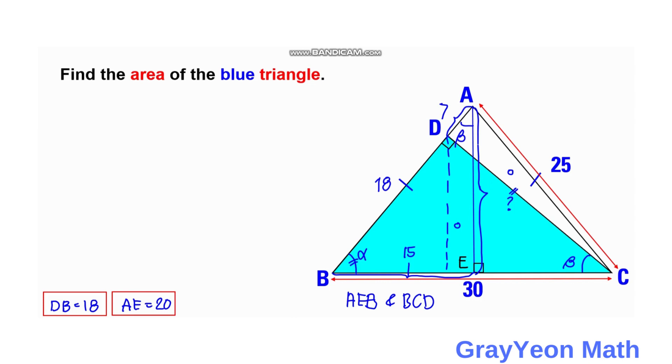The reason that we have to get the value of AE is that we are going to use the opposite over the adjacent ratio. We already knew that BCD is similar to AEB, and for AEB we have already the two lengths. BE is 15 and AE is already we have found that out, and for this blue triangle BD is 18 and the unknown is CD.